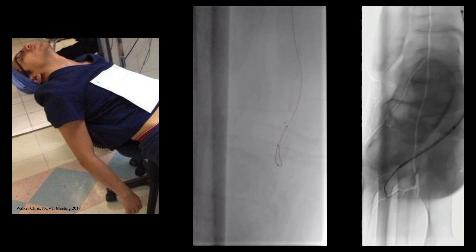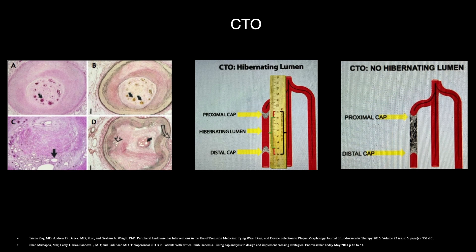In the far right image I'm performing a pedal loop access and recanalization with a balloon and a guide wire. This is what a CTO looks like under a microscope — the black arrows point to the tiny micro channels we're trying to access during recanalization. This is where so-called guide wire escalation comes from: 0.014 to 0.018 to 0.035, because you're trying to access channels of varying sizes. An important concept is whether you have a hibernating lumen, which is angiographically occult, or a non-hibernating lumen. A patent channel between the proximal and distal caps — a hibernating lumen — makes recanalization much easier than a fully occluded non-hibernating lumen.